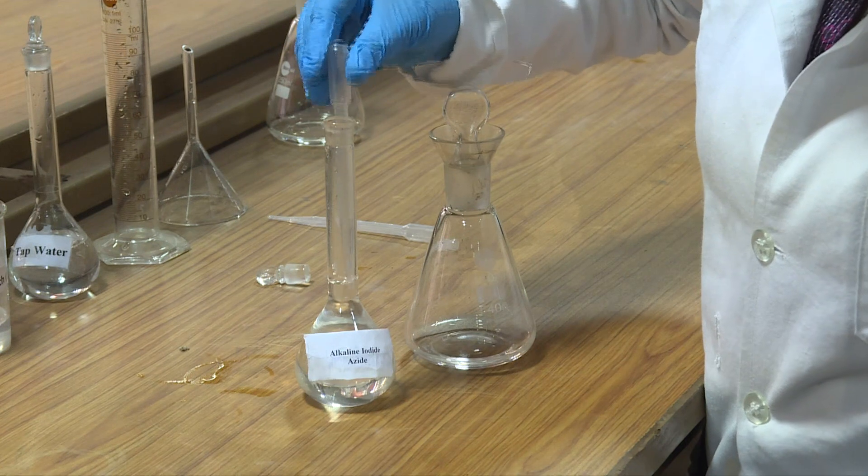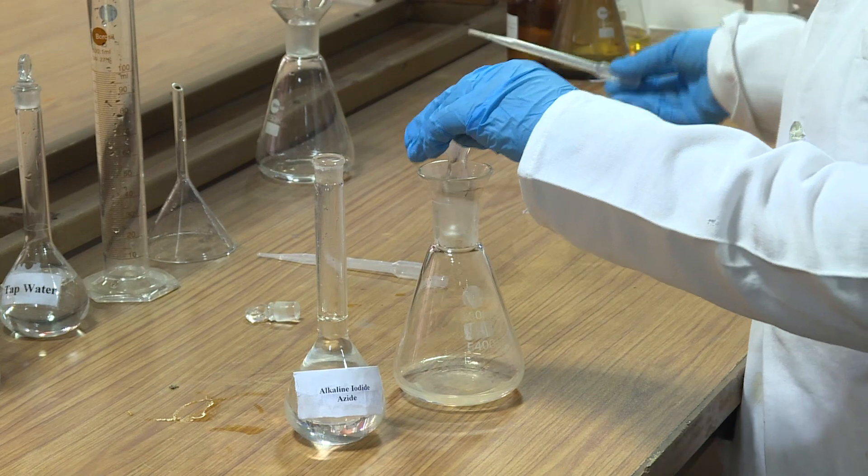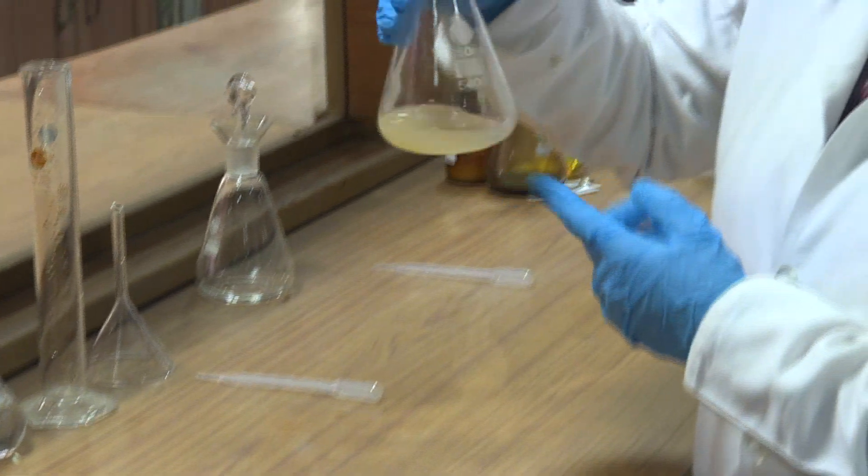Add 1 ml of alkaline iodide azide to the flask, insert the stopper, and shake it several times. Allow the precipitate to settle halfway and mix again.